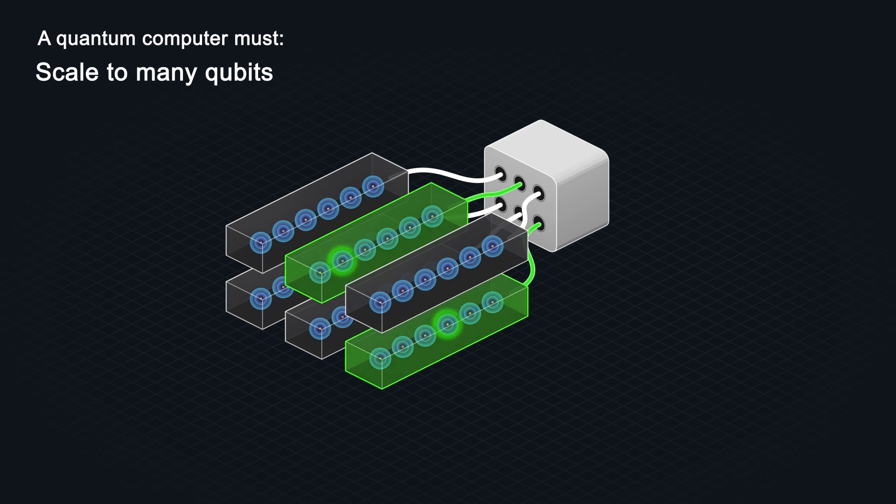Light from individual ion modules can be collected, allowing ion qubits from separate modules to communicate using photons rather than their motion. So far, scientists have wired up two such modules, and they are getting ready to deploy larger devices using several more.